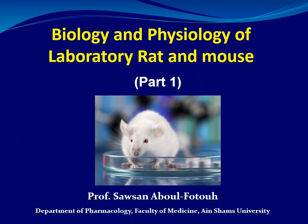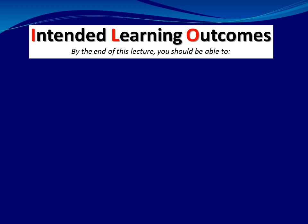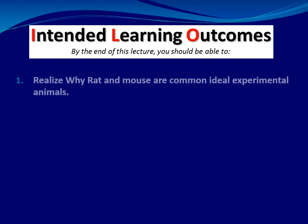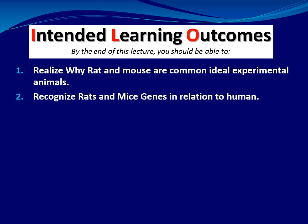Assalamu alaikum. We are going to discuss biology and physiology of laboratory rat and mouse, part 1. The ILOs: by the end of this lesson we should be able to — number one, realize why rat and mouse are common ideal experimental animals; number two, recognize rats and mice genes in relation to human; number three, comprehend the biology of rats.